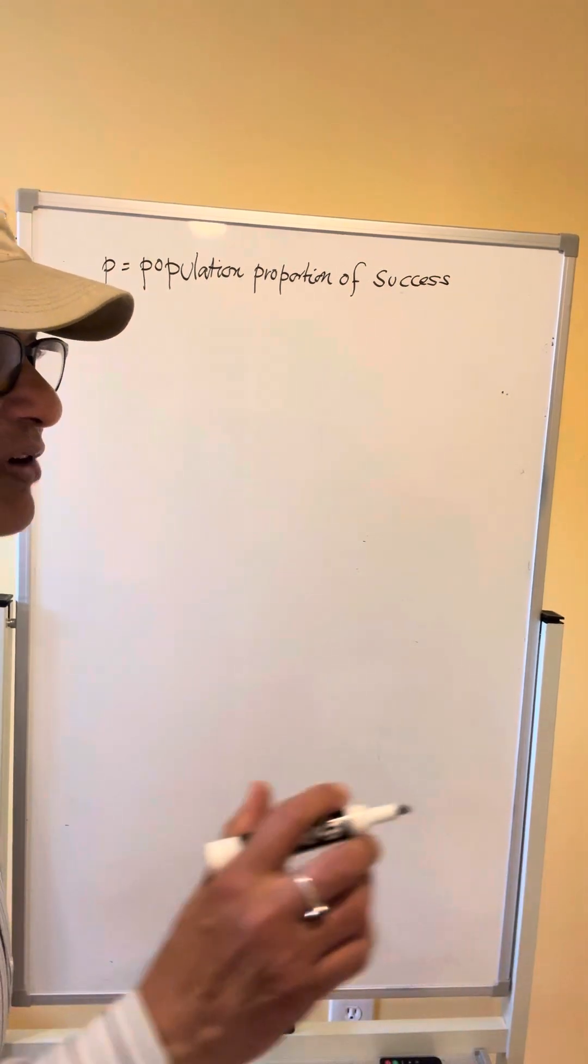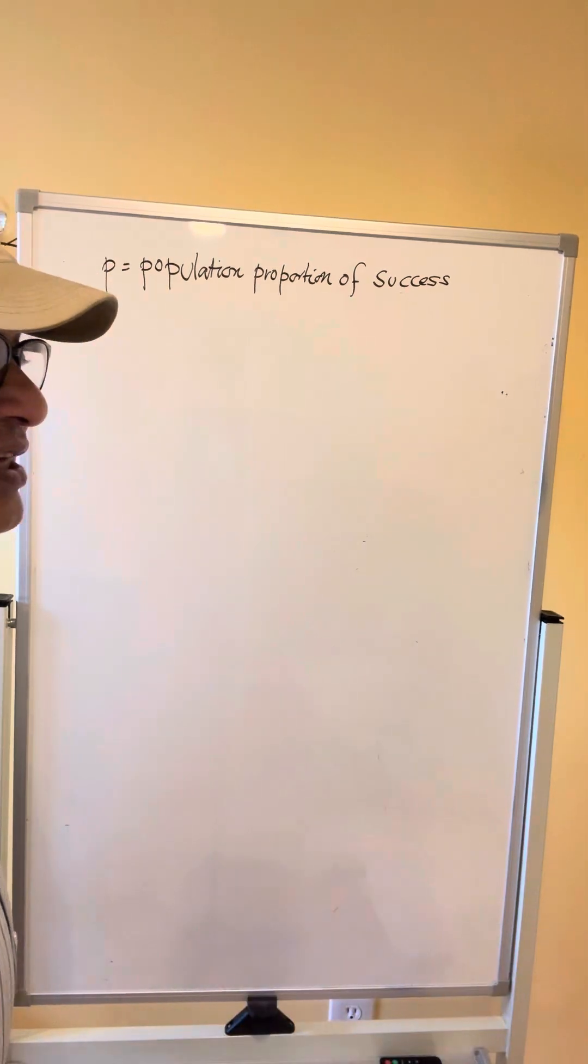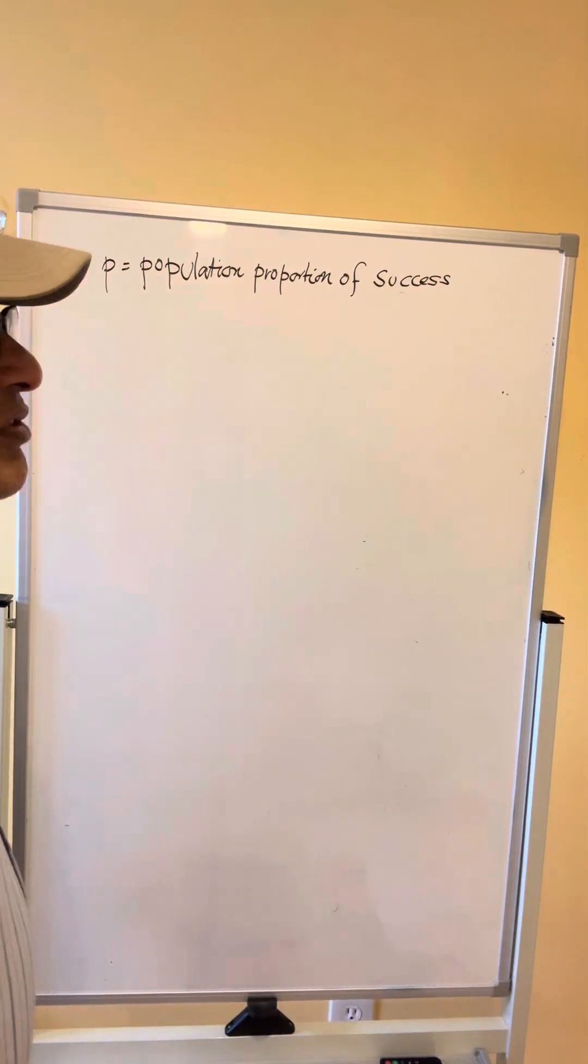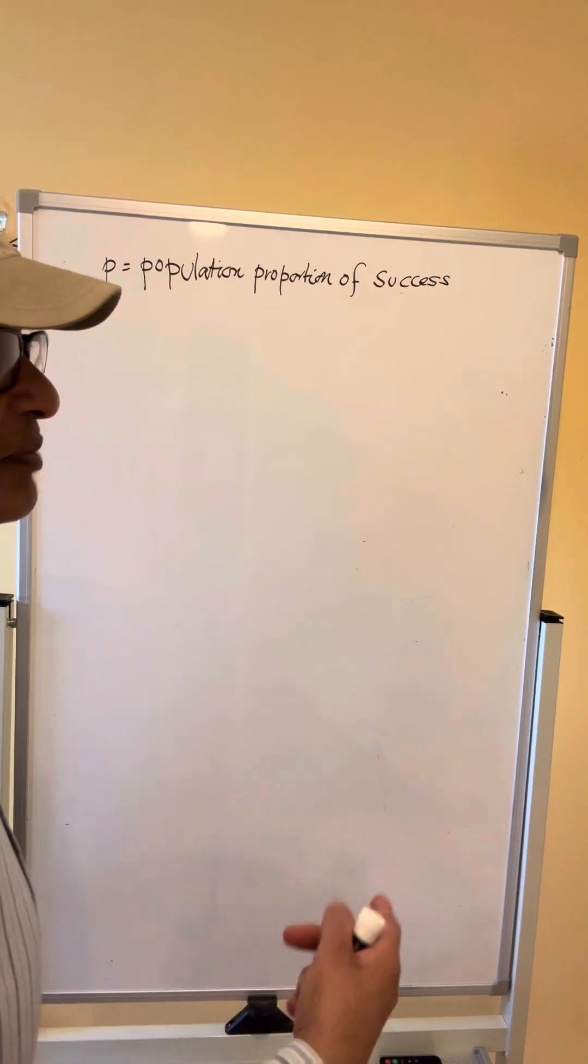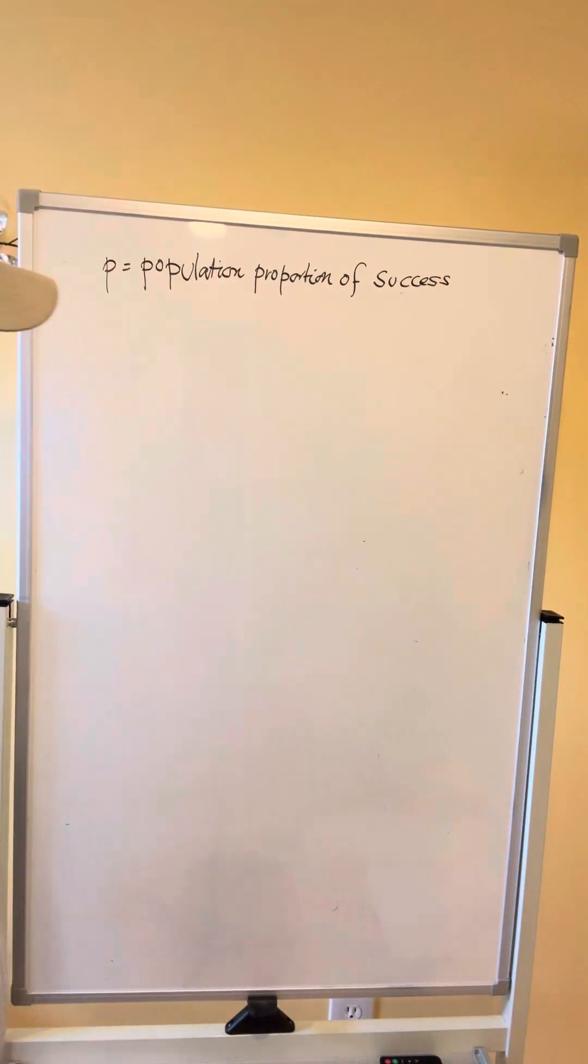such as if I want to find out what proportion of all students at a particular college have laptop computers, then P will be the population proportion of students who have laptop computers.